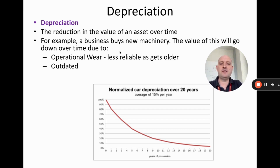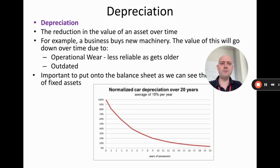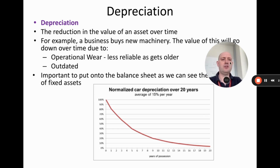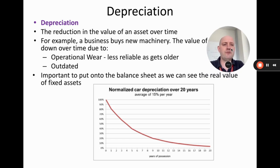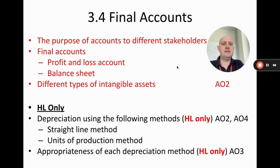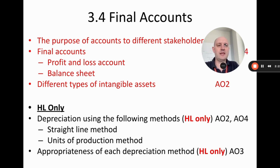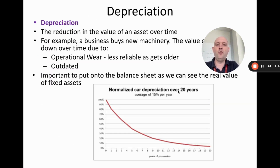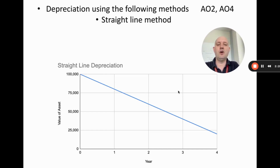It's the same for businesses. Obviously businesses will have cars, but they also buy machines and other types of assets which will go down in value. It's important to put these on the balance sheet so we can see the real value of the asset over time. In this chapter we're going to look at two methods of depreciation: one called the straight line method and one called the units of production method. Let's get going on the straight line method, which is by far the easier of the two.